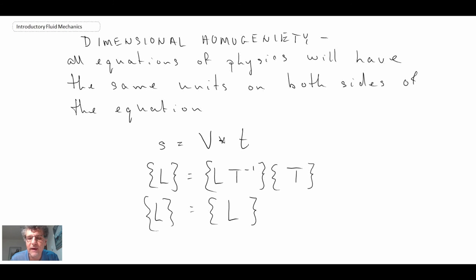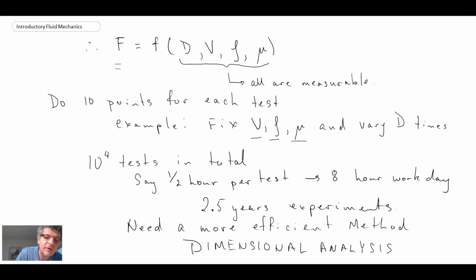And essentially what we're doing is we're taking a bunch of data. So instead of taking, like we showed in this example, 10 to the 4 tests and all these data points, you do fewer experiments, but you collapse your data, collapse your data onto curves that have your non-dimensional variables.